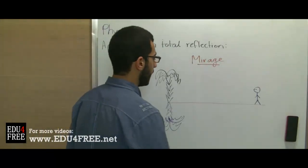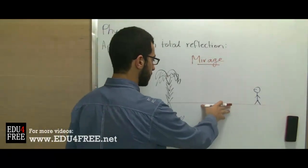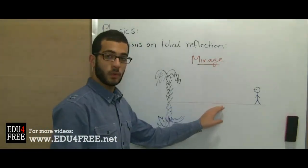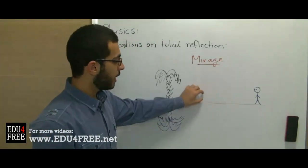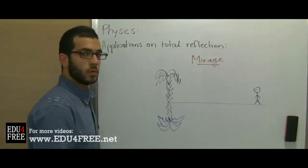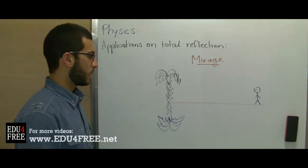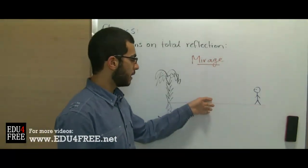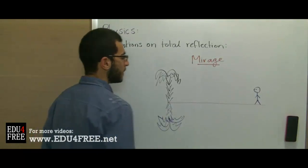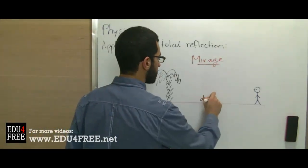So the sun's heat heats up the sand because the sand absorbs heat. And so it becomes very warm, so it heats up the air layer adjacent to the sand. This leads to decreasing the density of the air in the layer adjacent to the sand.